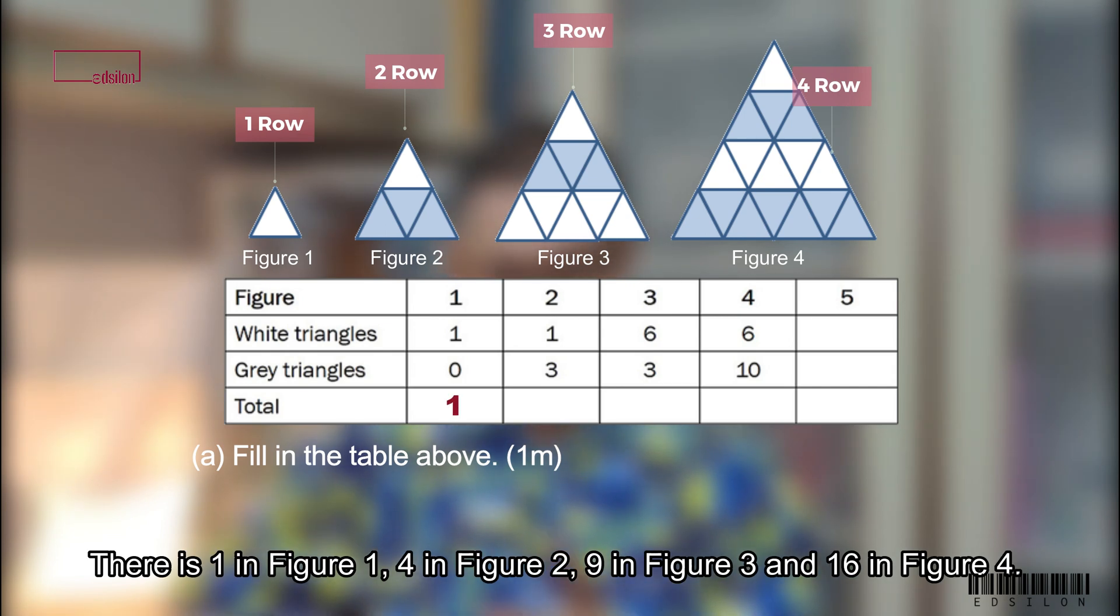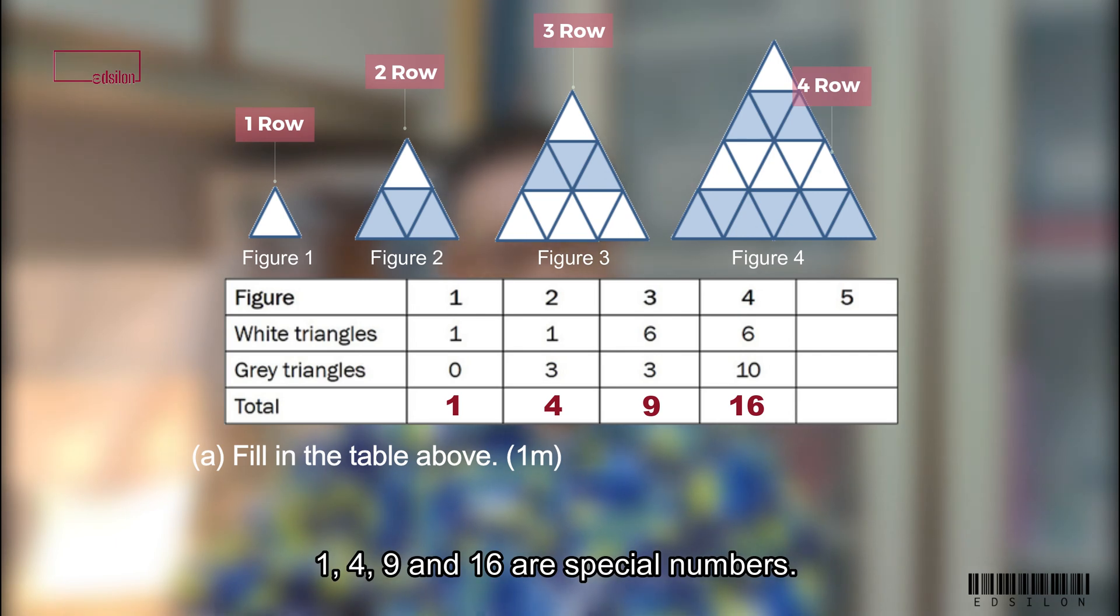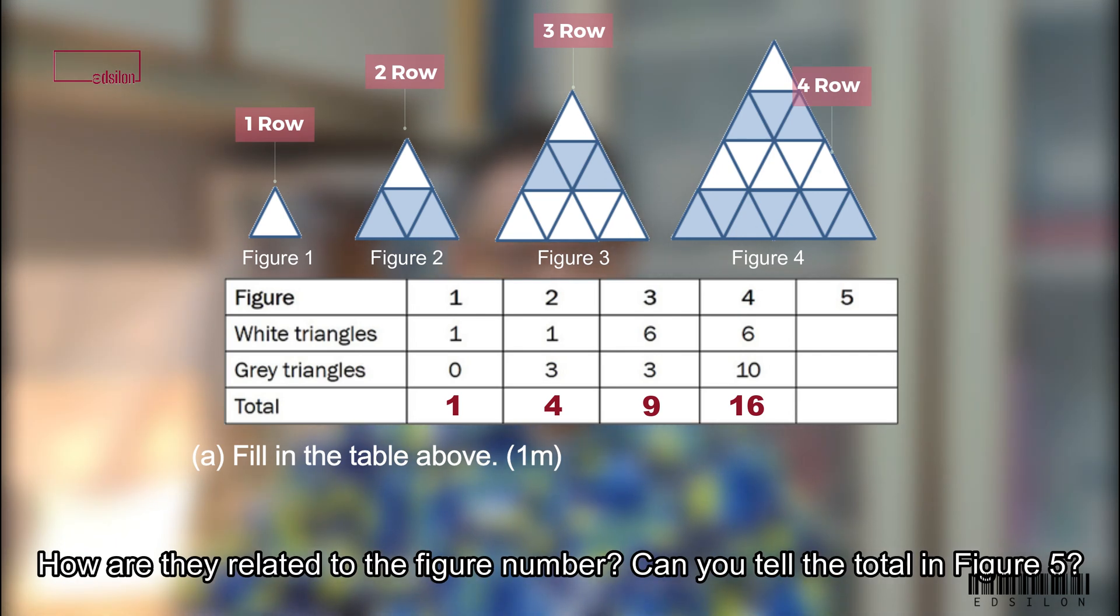Find the total number of triangles in figure 1 to figure 4. There is 1 in figure 1, 4 in figure 2, 9 in figure 3 and 16 in figure 4. 1, 4, 9 and 16 are special numbers. How are they related to the figure number? Can you tell the total in figure 5?